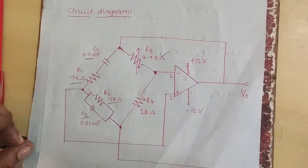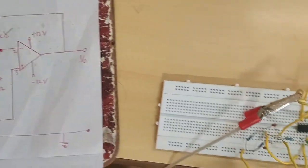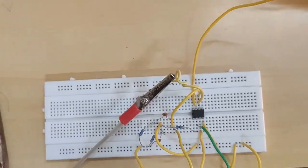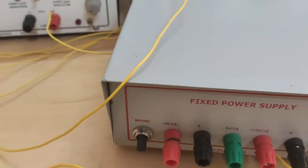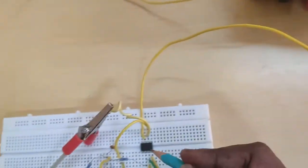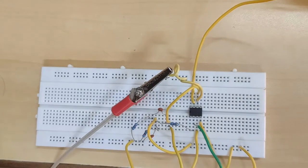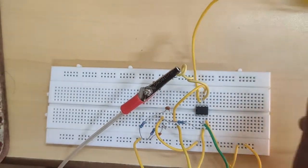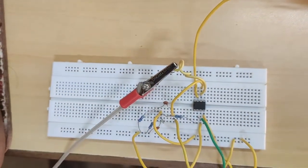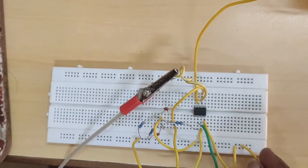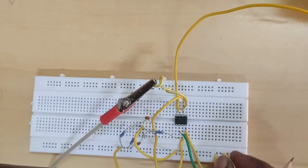Connect the whole circuit on the breadboard. First give the power supplies to the IC. 7th pin is the plus VCC and 4th pin is the minus VCC. Ground is circuit ground.